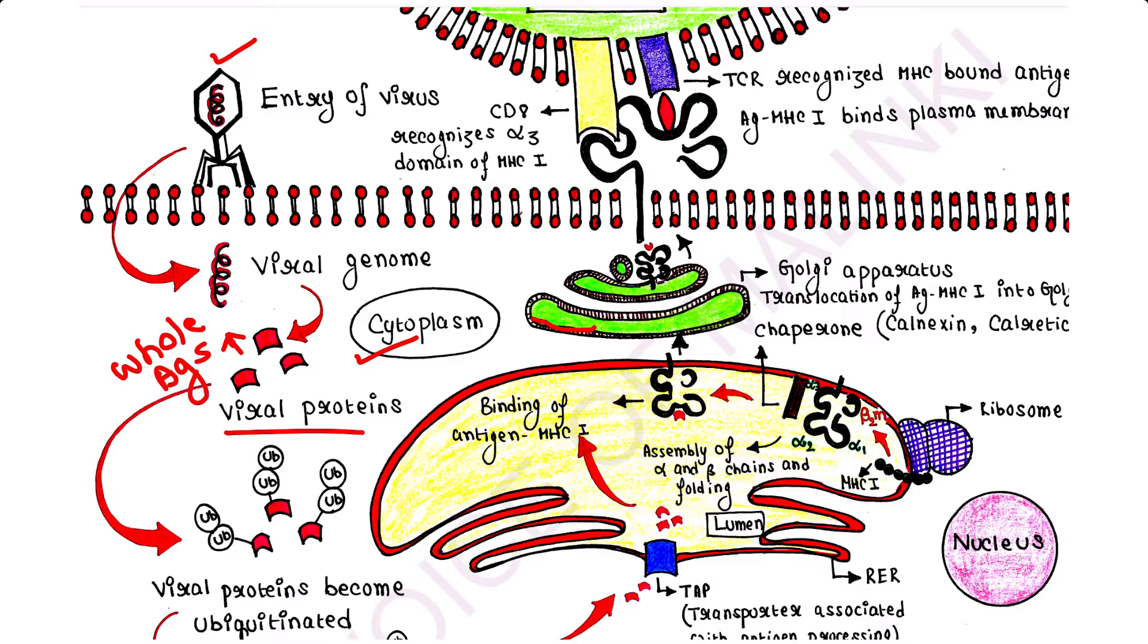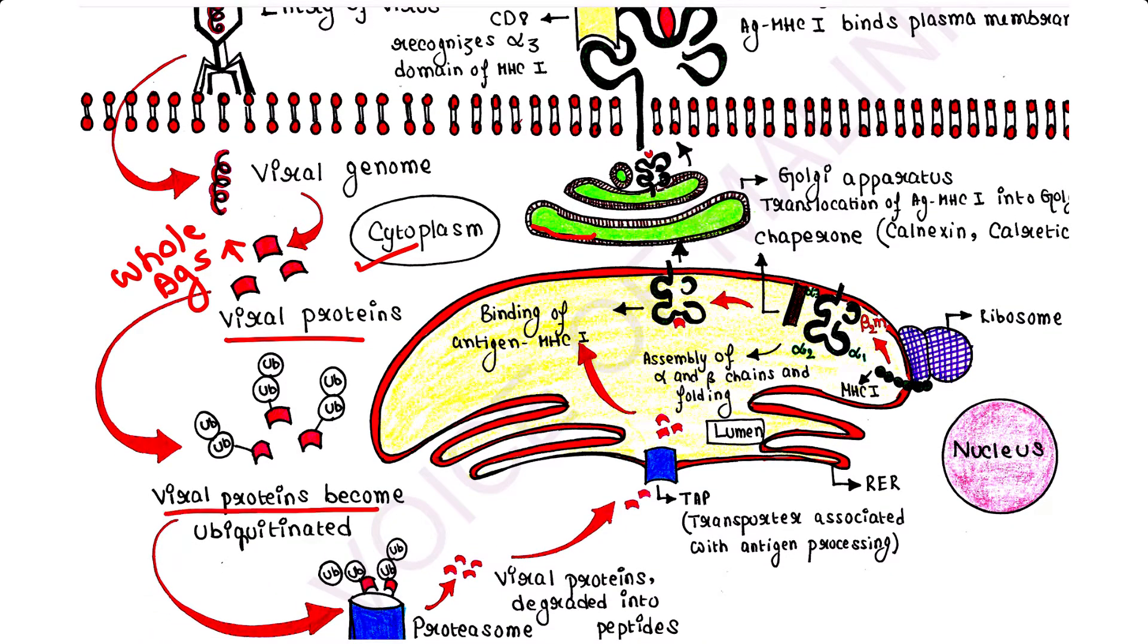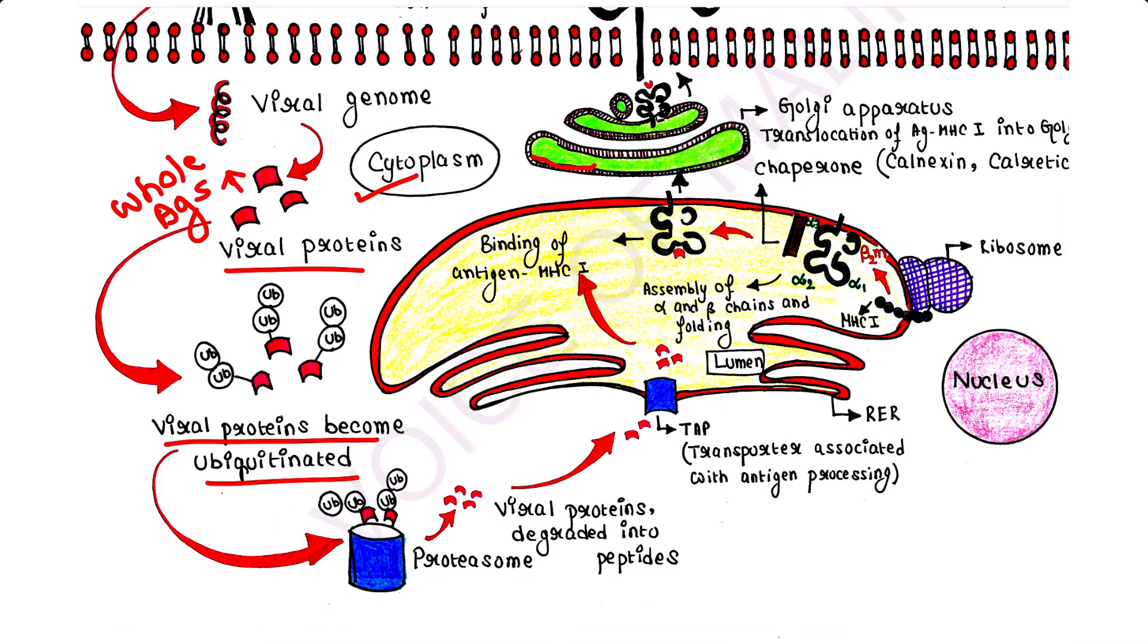These proteins become ubiquitinated. Viral proteins become ubiquitinated and are marked for proteasome degradation, because when a protein is ubiquitinated, it is targeted for proteasome degradation.